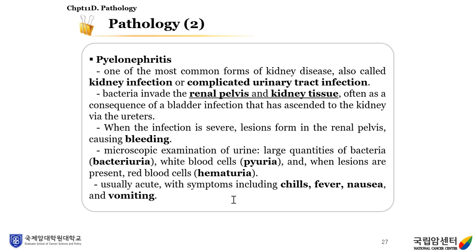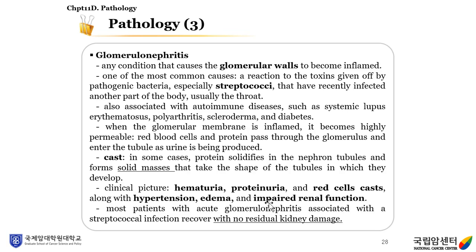Pyelonephritis symptoms are usually acute, including fever, nausea, and vomiting. Glomerulonephritis is any condition that causes the glomerular walls to become inflamed. One of the most common causes is a reaction to toxins from pathogenic bacteria, especially streptococci, that have recently infected another part of the body, usually the throat. Glomerulonephritis is also associated with autoimmune diseases such as systemic lupus erythematosus, polyarthritis, scleroderma, and diabetes.